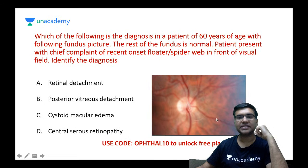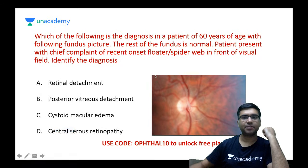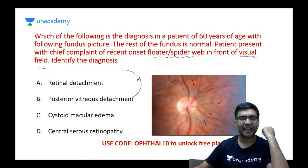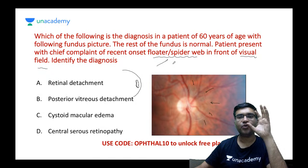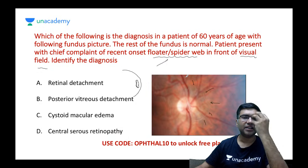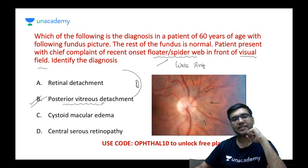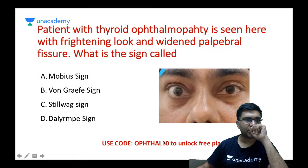A 60-year-old patient with a normal remaining fundus presents with recent onset of floaters described as a spider web in front of the visual field. In the fundus photo you can see a ring in front of the eyeball — the vitreous has detached from the posterior pole and this vitreous ring is coming in front of the eye, causing the floater. This ring is called Weiss ring and it is seen in posterior vitreous detachment (PVD). The answer is posterior vitreous detachment.